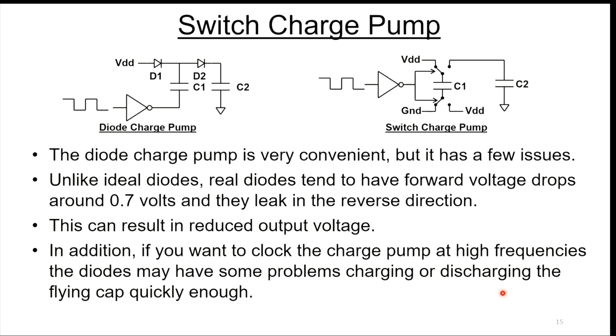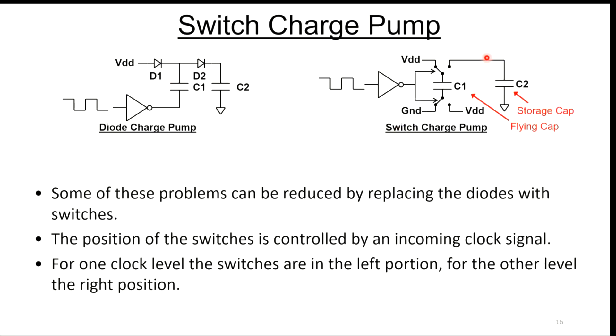The diode charge pumps I show here are very convenient, but they really have a few issues. Unlike ideal diodes, real diodes tend to have forward voltage drops, about 0.7 volts. They leak in the reverse direction. They're not ideal. That leakage current and the 0.7 volt drop can reduce the output voltage you're trying to generate. In addition, you might want to clock the charge pump at a very high frequency rate to reduce that ripple. It's difficult to charge the capacitors quickly through diodes. Diodes are going to have some resistance.